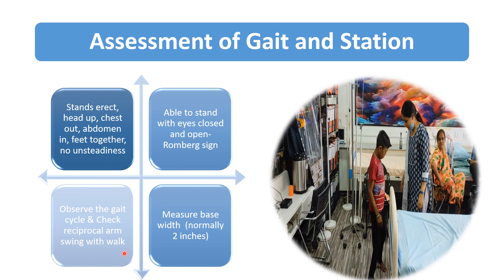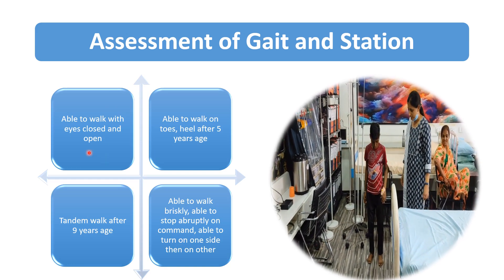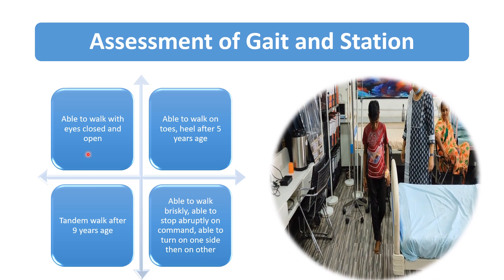We observe the gait cycle and check whether reciprocal arm swing is present. Then we measure the base width — the distance between both medial malleoli — which is normally approximately 2 inches. If it is more than 2 inches, we label it as a wide base gait. Then we tell the child to walk with eyes open, then with eyes closed.